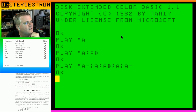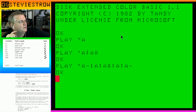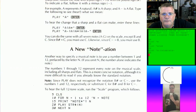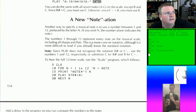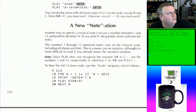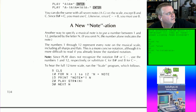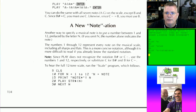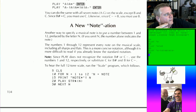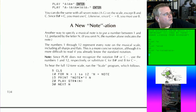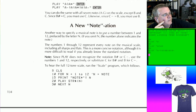You can do the same with all seven notes on the scale except B and C — since B sharp equals C, you must use C; since C flat equals B, you must use B. Another way to specify musical notes is to use numbers between 1 and 12 prefaced by the letter N — so N1, N2, N3, N4. The play command does not recognize B sharp or C flat; use numbers 1 and 12 respectively.